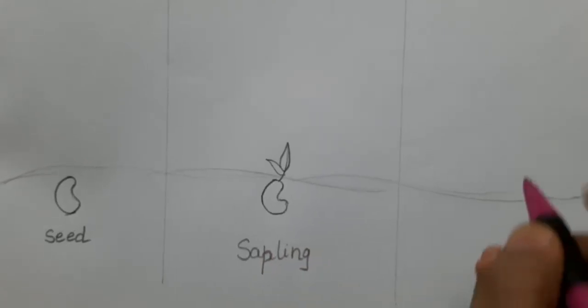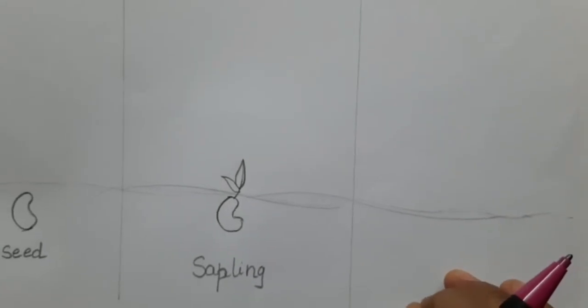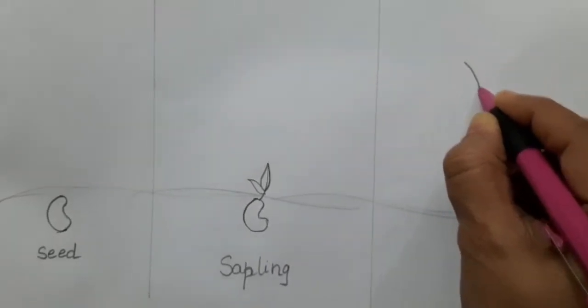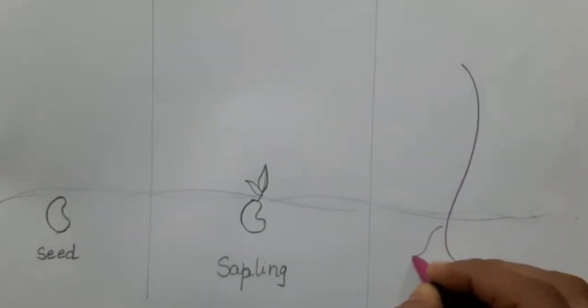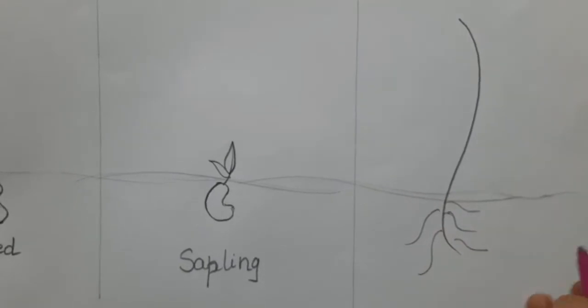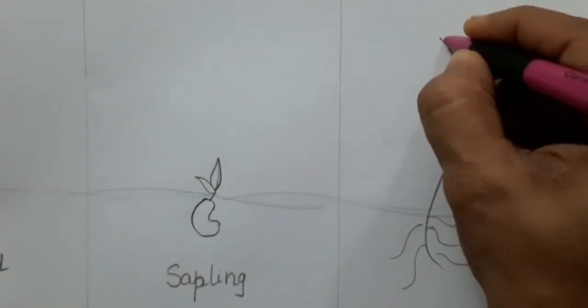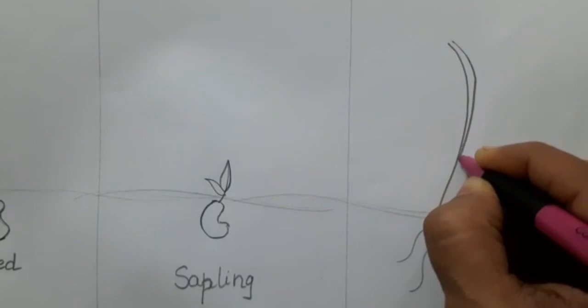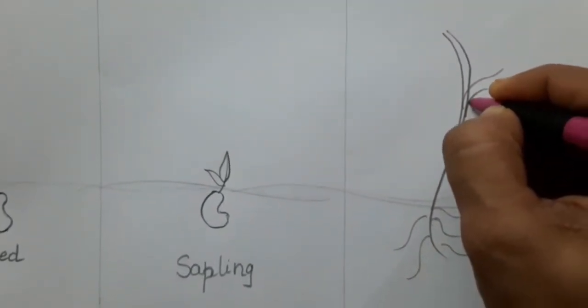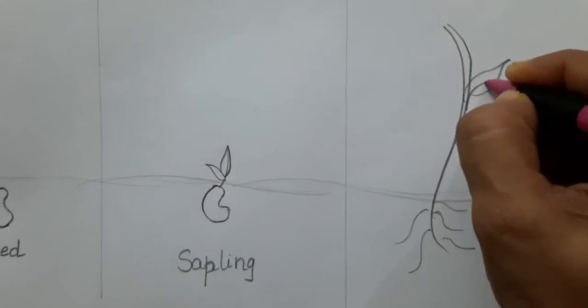Now here we are going to draw the last stage, and that will be a plant. Here, first of all, I am going to draw roots. And then we will draw... sorry, leaves.